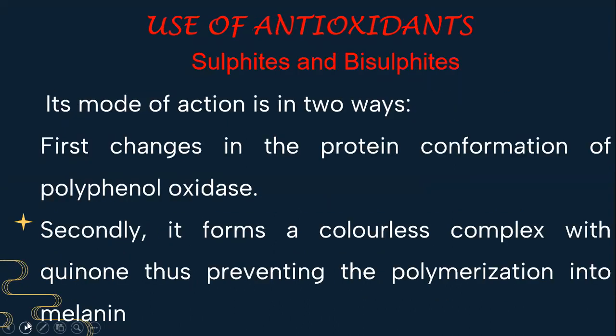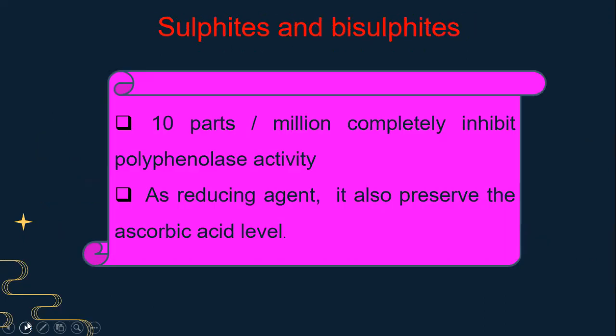Use of antioxidants — mainly sulfides and bisulfides. In this method they act as a two-way method. First, they cause changes in the protein conformation of polyphenol oxidases. Next, these antioxidants form a colorless complex with quinone, thus preventing the polymerization into melanin. Sulfides and bisulfides can be used at 10 parts per million to completely inhibit polyphenolase enzyme activity. These antioxidants are also used as reducing agents and preserve the ascorbic acid level present in the fruits and vegetables.